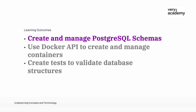More specifically, there are three core areas, or learning outcomes, in this module. First, we're going to learn how to create and manage PostgreSQL schemas, which will feed into our data structural testing. Second, we'll gain hands-on experience in creating and managing test databases using Docker. And finally, we're going to create a set of tests to validate our database structures — specifically the tables we have migrated over to our PostgreSQL database.